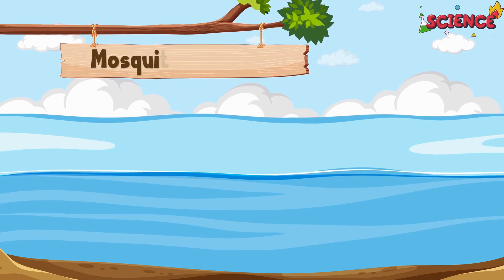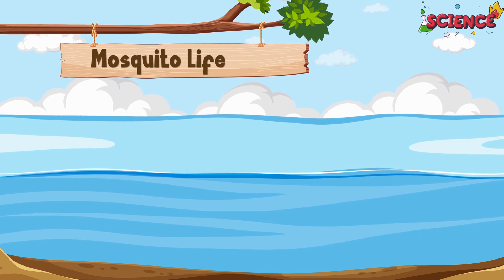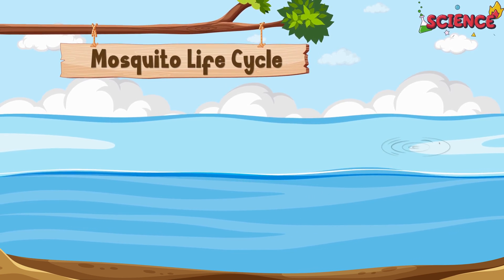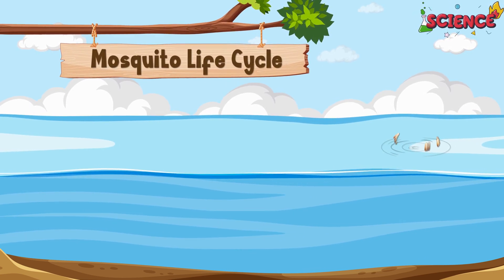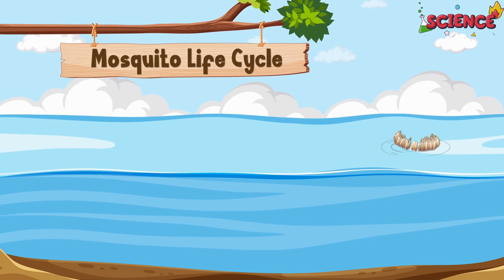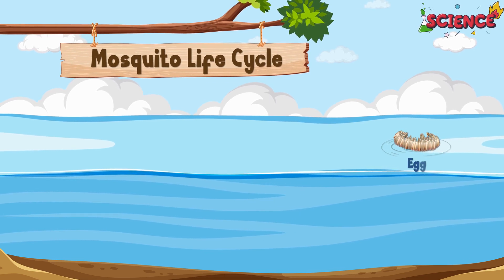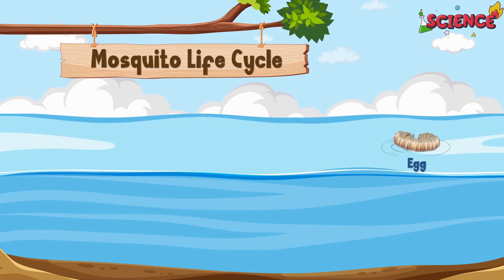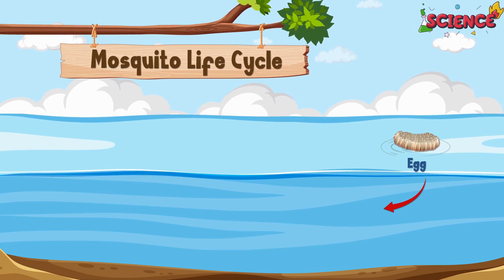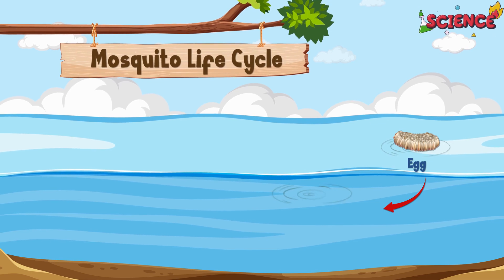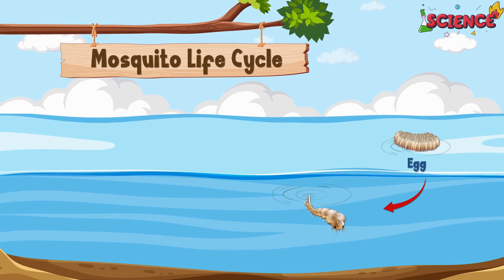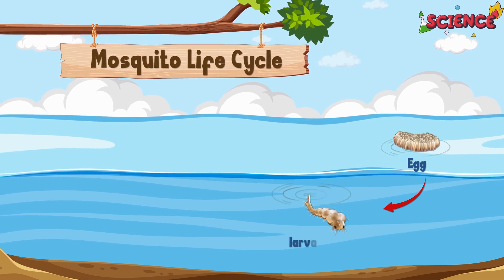Let's follow the tiny mosquito on its amazing journey of life. It all starts when the mosquito lays tiny eggs on water. Soon, the eggs hatch into little wrigglers called larvae. They swim around and grow fast.